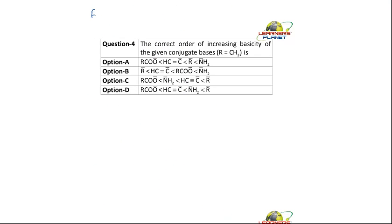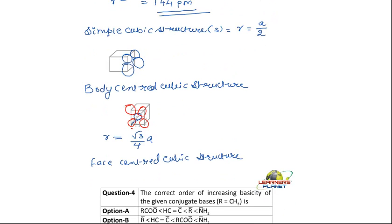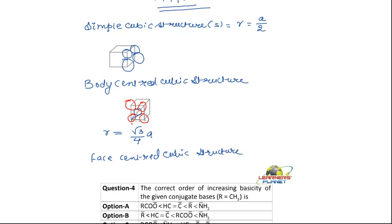Now for a face centered cubic structure, what is the thing? For a face centered cubic structure, the particles are present at the corners. And they touch the particles present at the center of each face. So the triangle goes like this. You have to calculate the face diagonal.